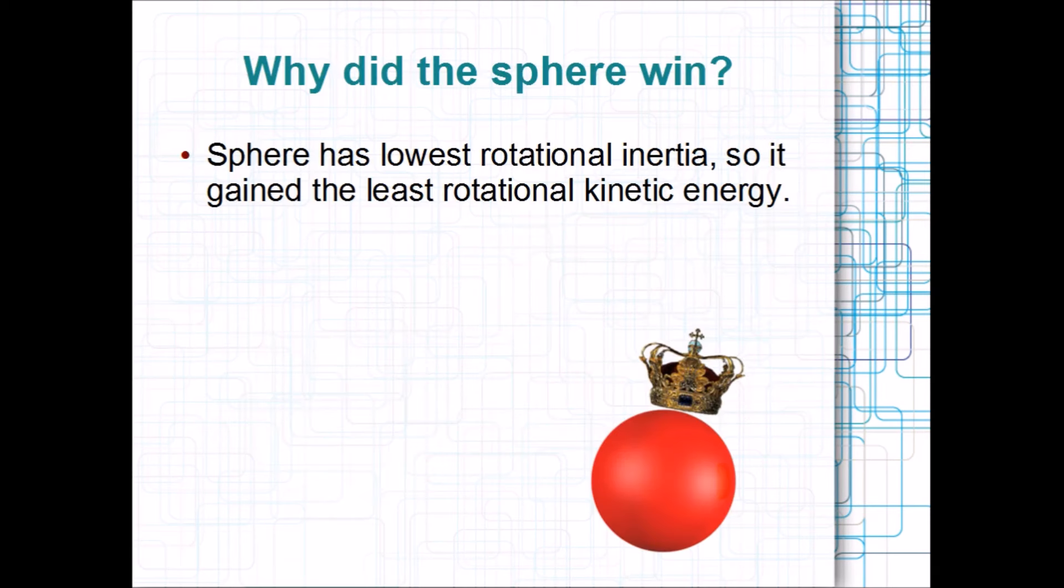So, that was the race. But why did the sphere win? Well, of the three shapes, the sphere actually has the lowest rotational inertia. That means it gains the least rotational kinetic energy, because they're proportional.